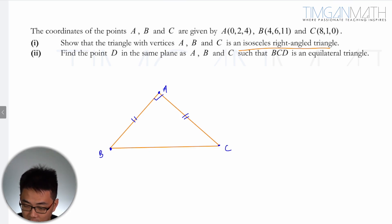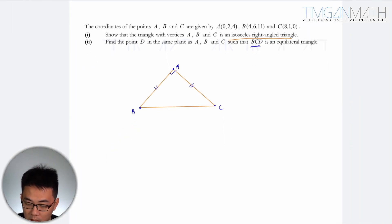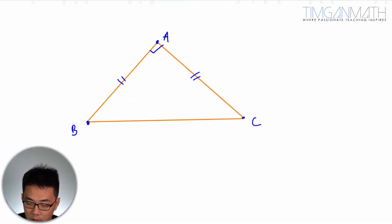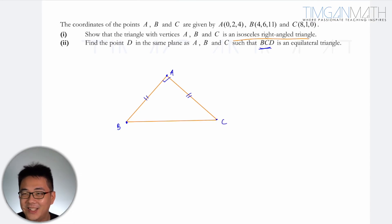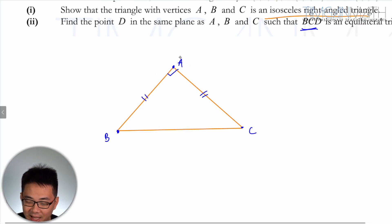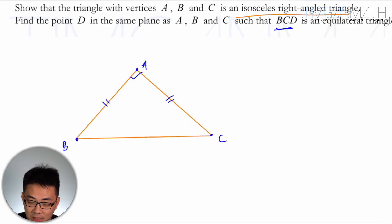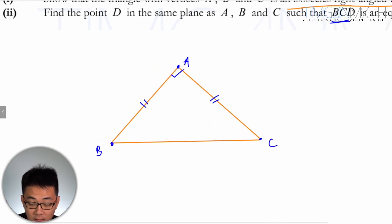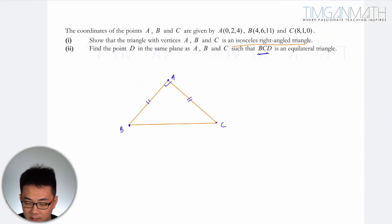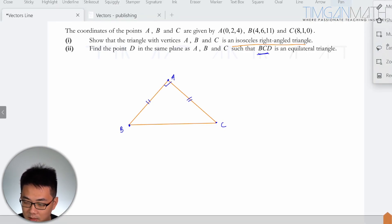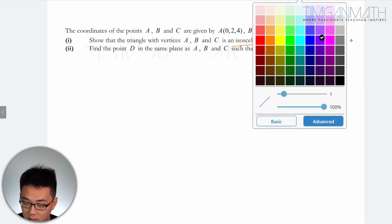Now find point D in the same plane as A, B, C such that BCD is equilateral. So how would you do it? A has nothing to do with D here, because if it's an isosceles triangle you need it to be 60 degrees — so actually the first part has nothing to do with the equilateral triangle. So I can just erase this part. What I need is just B and C.